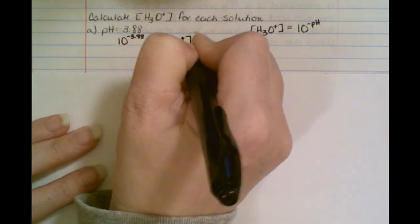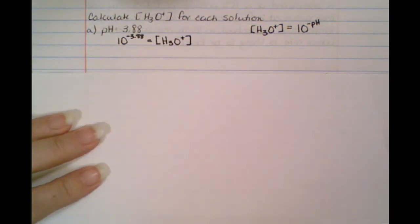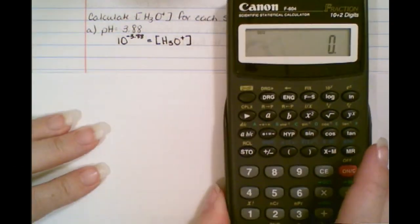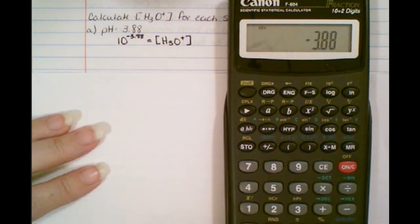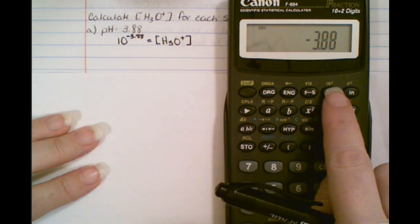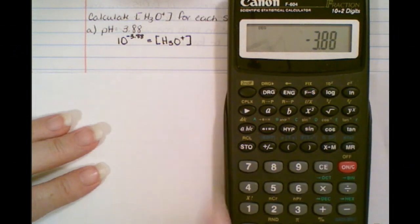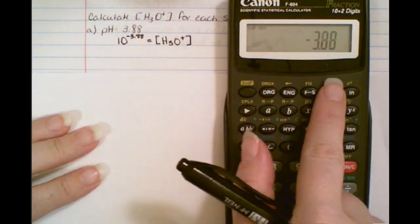Remember, setting it up is half the battle. Now you're going to take your calculator and you're going to put what it's raised to in first. So I've got a minus 3.88. And then if you look above the LOG button, you see this little 10 to the X. So you're going to push 2nd LOG.